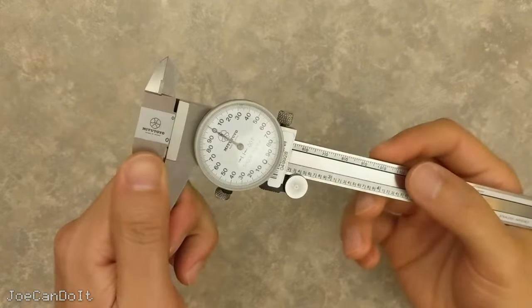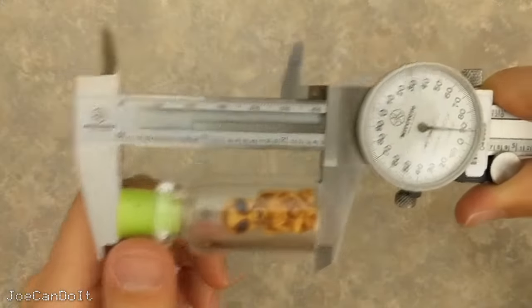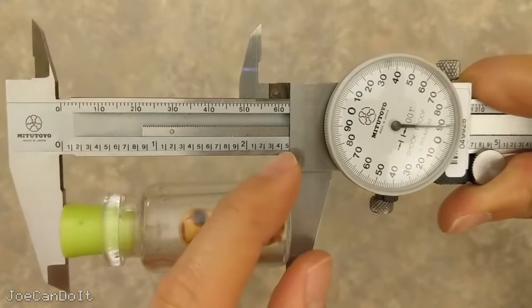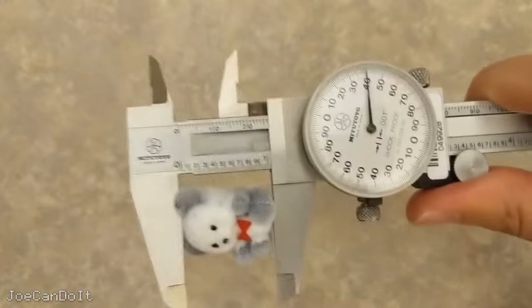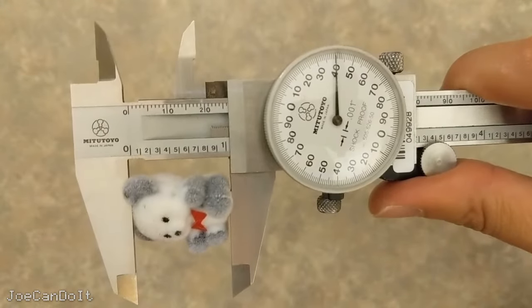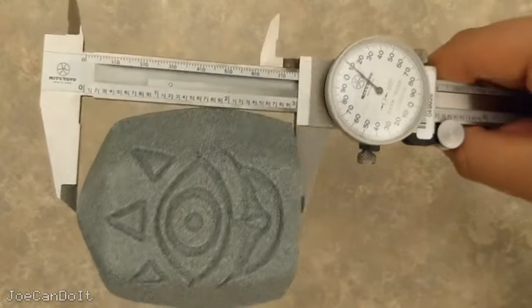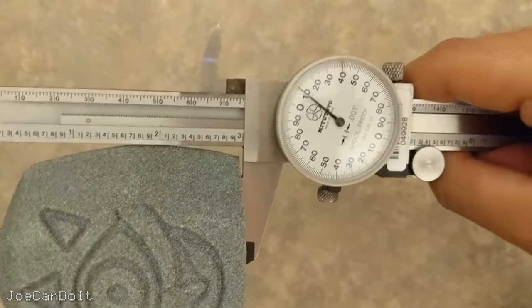Now let's practice by measuring a few household items, like this shrunken alien. And that reads about 2.491. Or this mini teddy bear, which reads about 1.040. And last but not least, this gossip stone, which is 3.011.